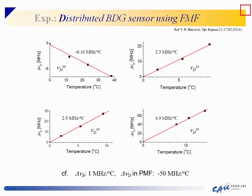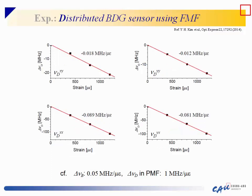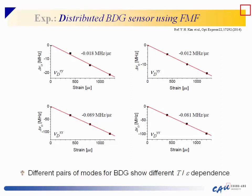We tested temperature and strain dependence of BDG frequency for different mode pairs in the few-mode fiber. They show different slopes for each mode pair. Compared to ordinary Brillouin frequency and BDG frequency in PM fiber, the temperature sensitivity is slightly larger than ordinary Brillouin but much lower than BDG in PM fiber. Strain dependence shows a negative slope for some mode pairs — different from ordinary cases. These different sensitivities suggest potential for discriminative sensing of temperature and strain in the future.